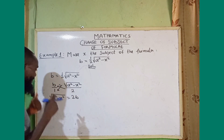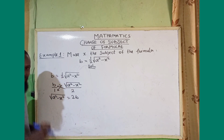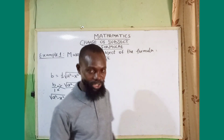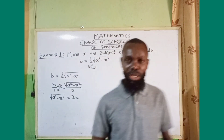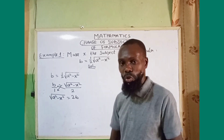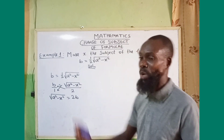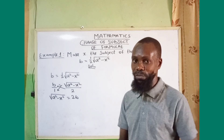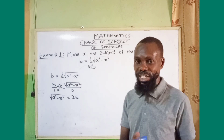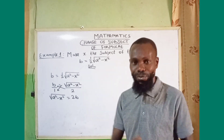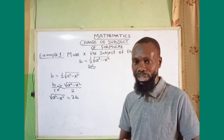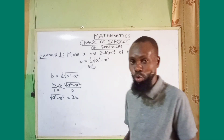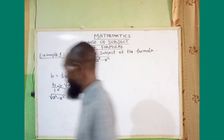My unknown x is inside the square root — it's in bondage. I have to release x from the bondage. Since this is a square root, I have to square both sides. Remember: the opposite of square roots is squaring. So let us square both sides.